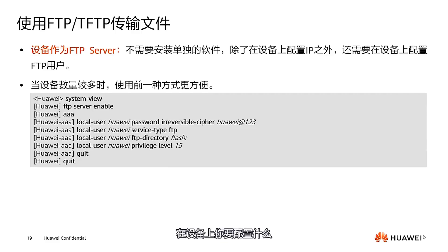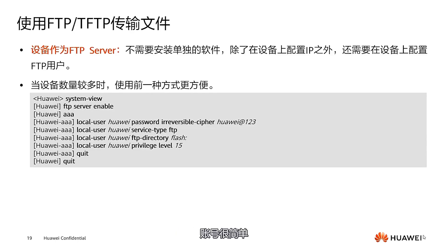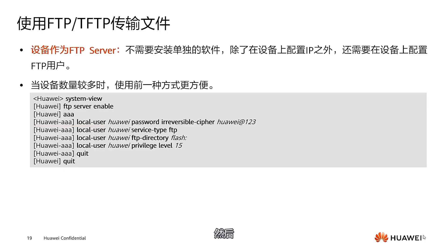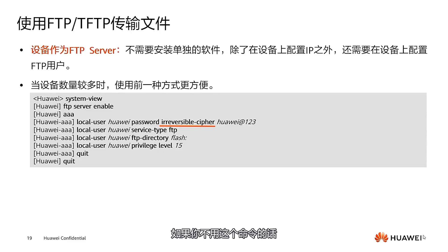The fourth issue is when the terminal uses a static IP address. If the terminal uses a static address without specific requirements, you should change it to dynamic. If you must use a static address, confirm the static IP address, check for any issues with the mask configuration and IP subnet, and ensure there are no address conflicts.